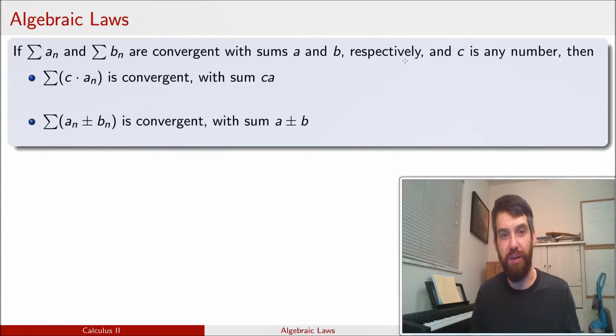Likewise, if I have a couple different series, and both of those individual series are convergent, I can add them so-called term by term. That is, I can take the sum of the term by term additions, and that just ends up being the sum of the two different limits.